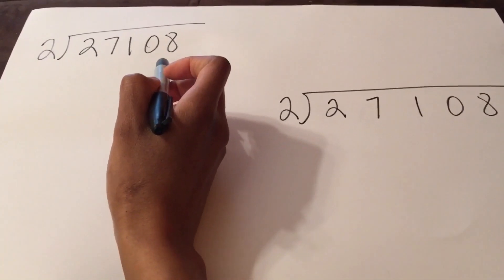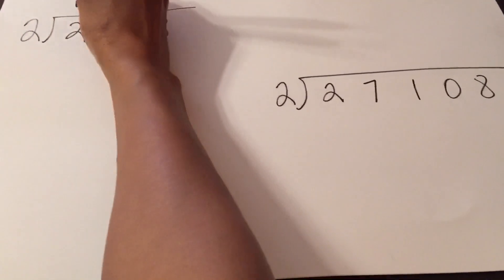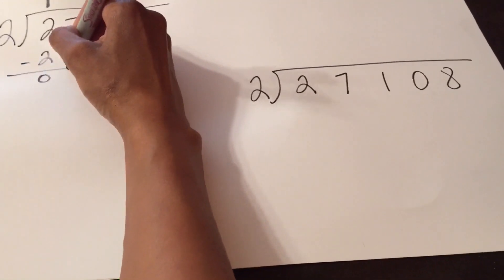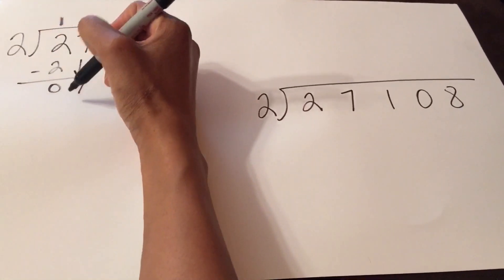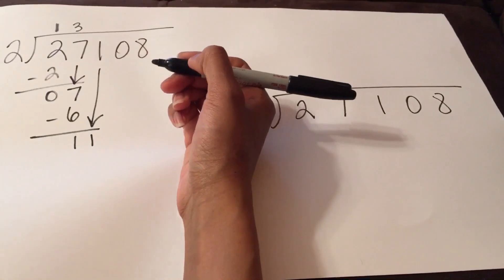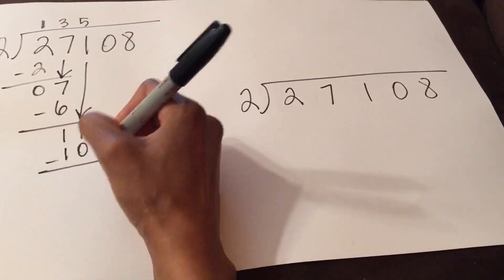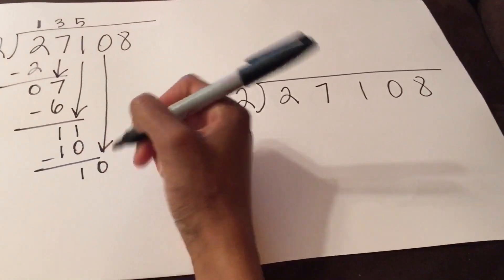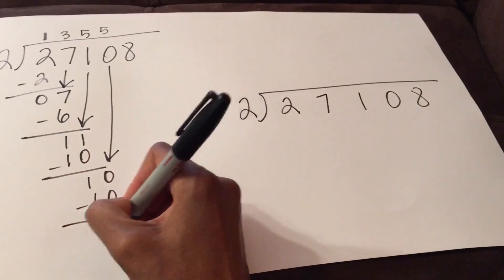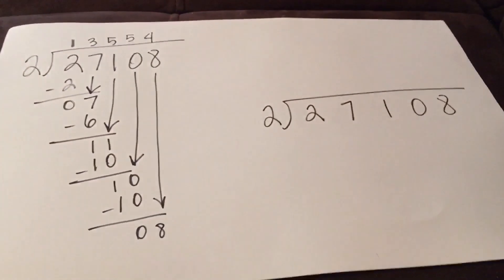I'll follow my normal long division rules. Two going into two goes one time, and that is two. When I subtract I get zero. Bring down my seven — two goes into seven three times, that's six. Subtract, get one. Bring down this one — now I have eleven. Two goes into eleven five times, that's ten. Subtract and I get one. Bring down this zero — two goes into ten five times, that's ten. Subtract, get zero.